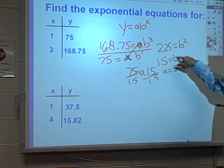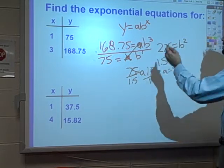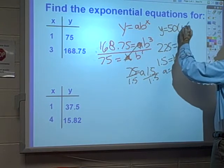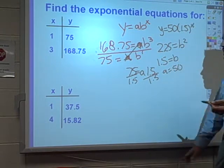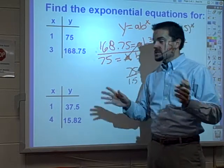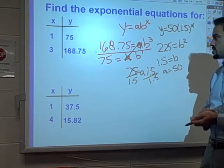So now I've got the b value, I've got the a value, just rewrite it up here in this equation. Y equals 50 times 1.5 to the x. Plug it into your calculator, make sure that these two points come up in the table. If that works, then congratulations, we've got this problem solved.